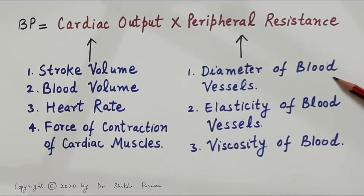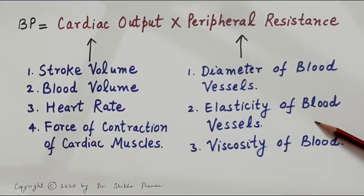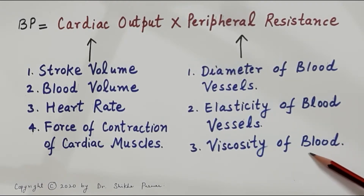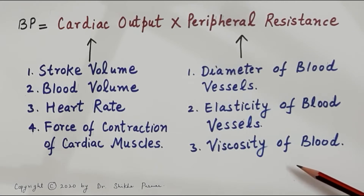Vasoconstriction increases peripheral resistance whereas vasodilation reduces peripheral resistance. Peripheral resistance also depends upon the elasticity of blood vessels — higher the elasticity, lower the peripheral resistance, and more the hardening of blood vessels, more will be the peripheral resistance. It also depends upon the viscosity of blood — higher viscosity means more peripheral resistance, and lower viscosity means lower peripheral resistance. These are some very important factors on which blood pressure depends.